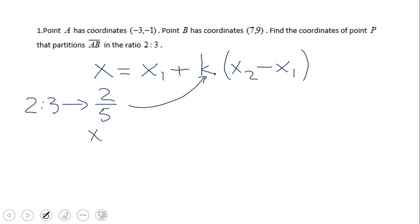And we're going to have x equal: now x1 is nothing else than the x-coordinate of the first point, which is A in our case, because we start from A and go to B. So that will be negative 3 plus, now K as I said 2 fifths. Now x2 is obviously the coordinate of the second point, point B, which is 7 minus negative 3.